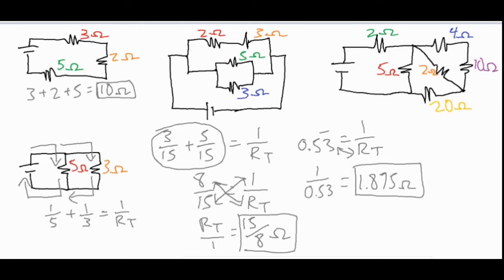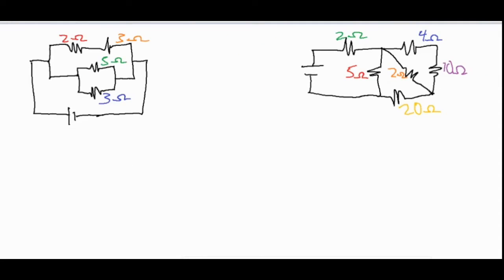Whatever your preference, either method will find the total resistance for that parallel circuit. Now moving on to our last two combination circuits. We're going to use the same skills as before, but this circuit has a series branch and a parallel branch. What you want to do is take your smallest parallel chunk and collapse it down to look like a single resistor.